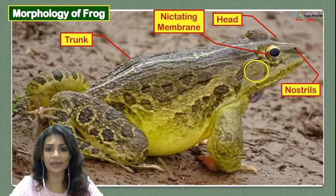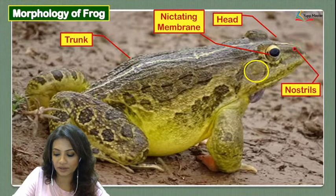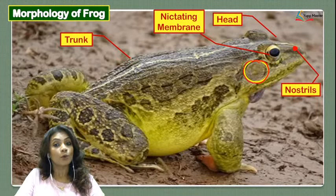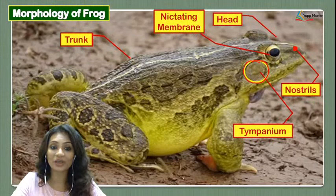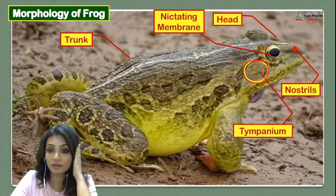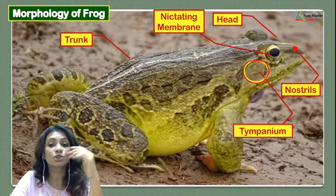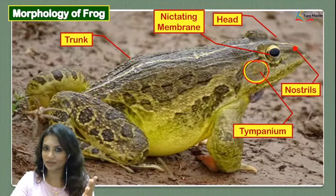The nostrils are also present on the head. The ear of the frog is called the tympanum. It is a depressed ear — there is no external apparatus like a pinna. It's attached almost at the level of the rest of the skin and is called the tympanum.